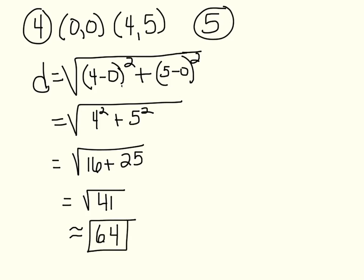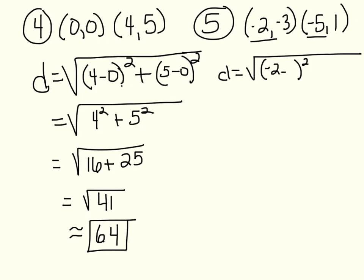The last one, number 5, we're going to find the distance between the two points, negative 2, negative 3, and negative 5, 1. D equals, subtract our x's. So we could do negative 2 minus negative 5, plus, subtract our y's, negative 3 minus 1.